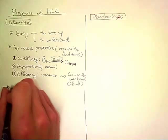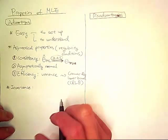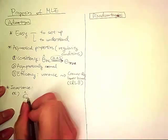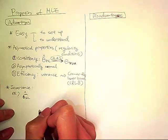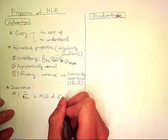So the last advantage we're going to talk about is invariance. MLE invariance means MLE is invariant under functional transformation. For example, say this is MLE of sigma, the population standard deviation.